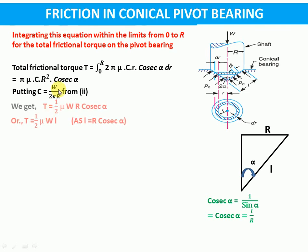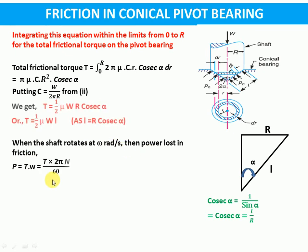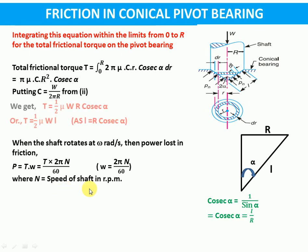So considering uniform wear in a conical pivot bearing, total frictional torque is T equals (1/2)·mu·W·R·cosecant alpha. In the same way we can calculate the power lost in friction if we know the speed with which the shaft is rotating. When the shaft rotates at omega radian per second, then power lost in friction will be torque times omega, that is 2πNT by 60, where N is the speed of the shaft in rpm.